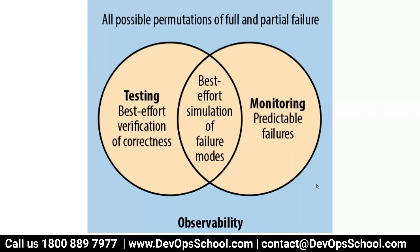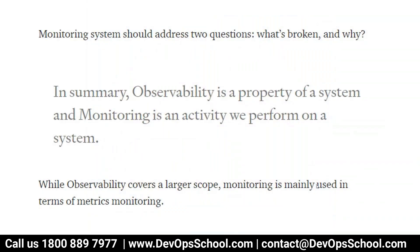Observability has become very popular nowadays because of SRE. If you want to configure SRE, observability is one of the important parts of it — that is where we get SLI, and based on the SLI you set up a contract and then SLO is done. A monitoring system should address two questions: what's broken and why? Observability covers the larger scope, while monitoring is mainly used in terms of metrics. In summary, observability is a property of the system and monitoring is an activity performed on the system.